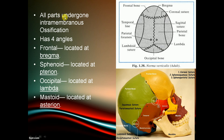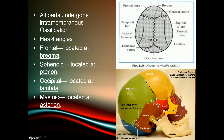All four parts of the parietal bone undergo intramembranous ossification. It has four angles: the frontal angle at the bregma, the sphenoid angle at the pterion, the occipital angle at the lambda, and the mastoid angle at the asterion.